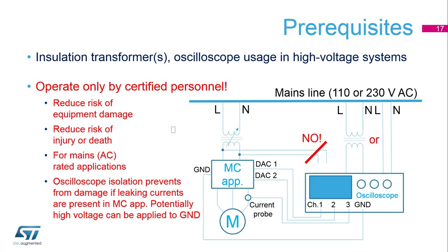When speaking about applications supplied from the mains line, we need isolation transformers. High-voltage applications shall be operated only by certified personnel with proper education and use of protective equipment. Isolation transformers reduce the risk of damage to your equipment and reduce the risk of death or injury. If you additionally use isolation of the oscilloscope further from the isolation of your main application, you can benefit from removing current leaks that may be present in the motor control application.